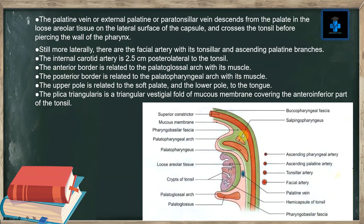Observing the diagram: this is the superior constrictor, this is the buccopharyngeal fascia, and this is the loose areolar tissue. This is the hemi-capsule of the tonsil, and here we can see the tonsillar artery and facial artery.